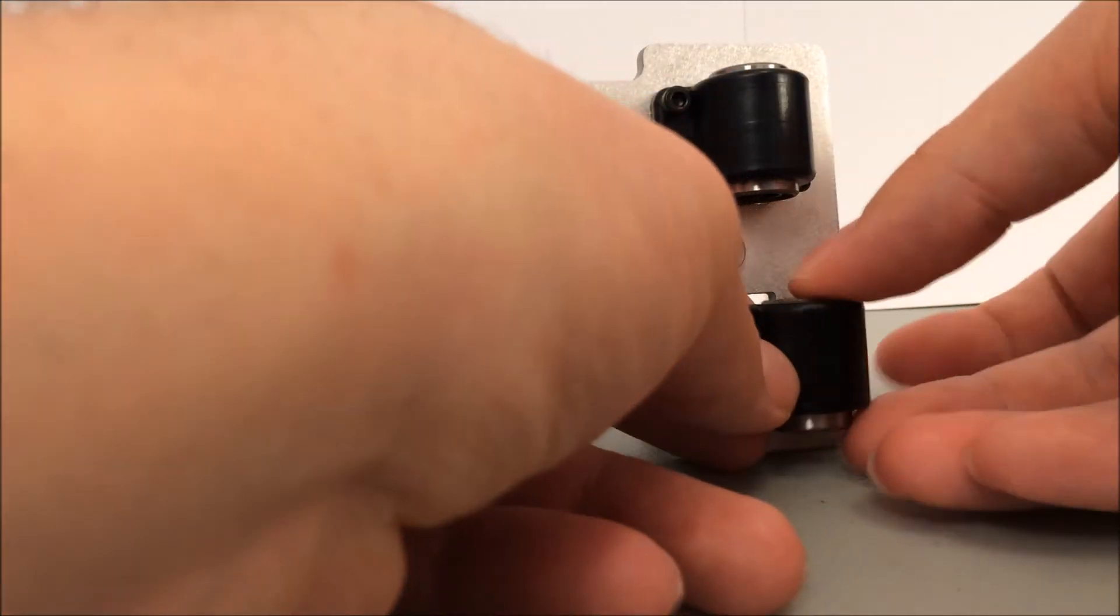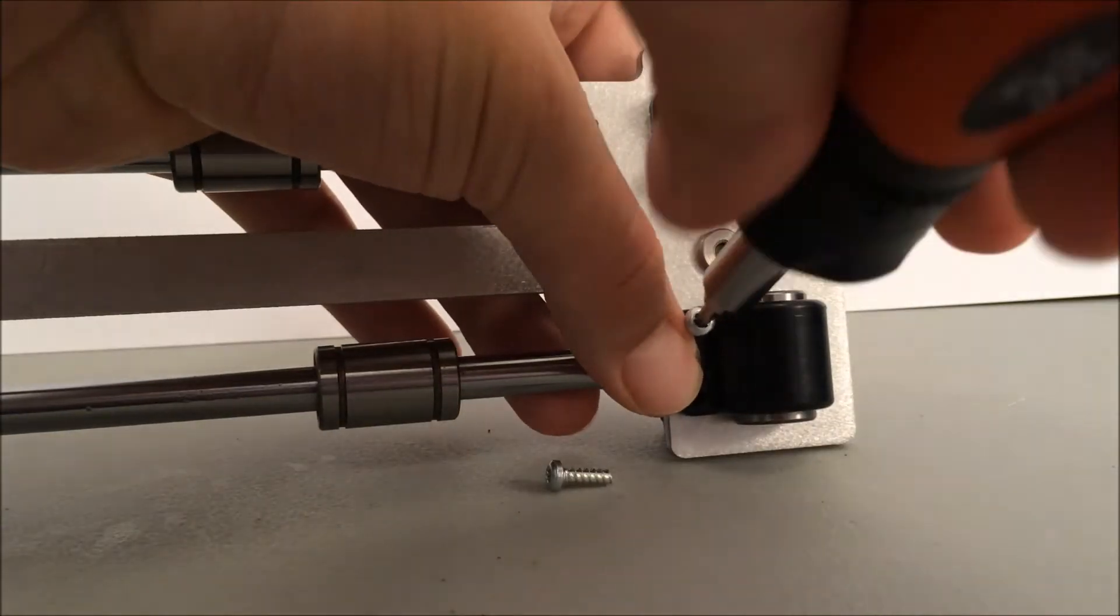This can be a little tricky to make sure the bearing lands in the trench. Just make sure it's in place before you feed through the plastite screws.